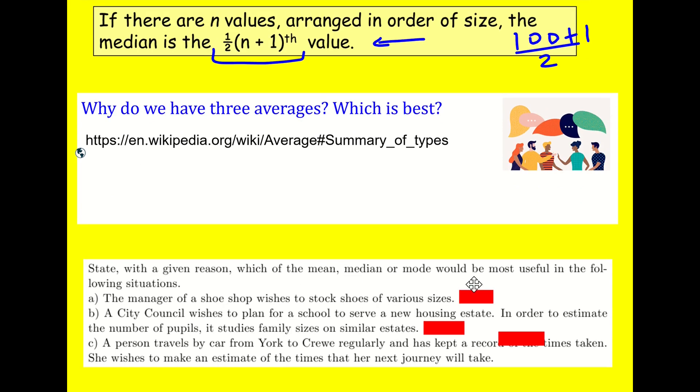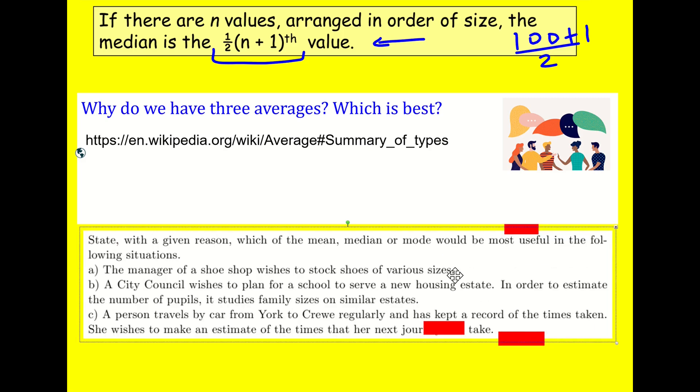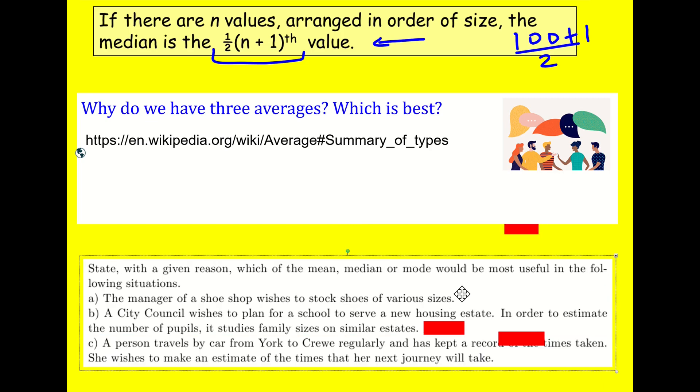State with a given reason, which is the mean, median or mode would be most useful in the following situations. Okay. The manager of a shoe shop, a really like shoes are measured in these discrete values. So like six, seven, eight, maybe eight and a half, but we can't get any value. So actually when the shoe shop is looking at shoe stocks, they don't, they don't want to know what the middle value is necessarily.